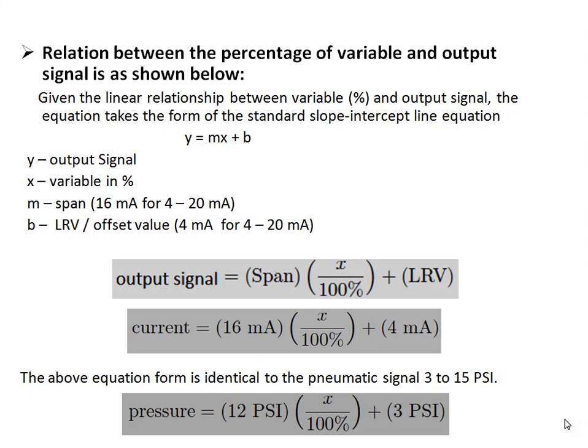The relation between the percentage of the variable and output signal is shown below. Given the linear relationship, the equation takes the form of the standard slope-intercept line equation: y = mx + b. Here y is the output signal, x is the variable in percentage, m is the span — which is 16 mA for 4 to 20 mA signal — and b is the lower range or offset value, which is 4 mA for the 4 to 20 mA signal range.